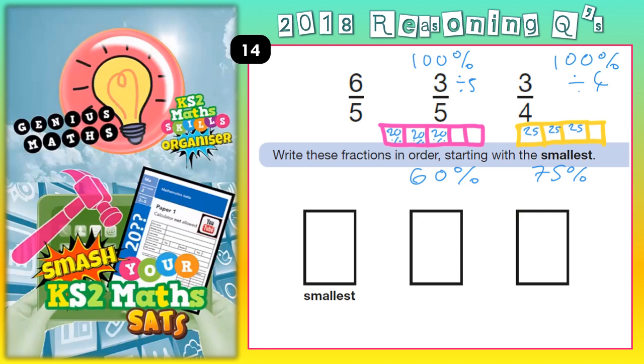Now then from there, you could just use a little bit of logic. Because 6 fifths is obviously bigger than a whole one. It's an improper fraction. 6 divided by 5 is 1 remained 1. And because we're dealing with fifths, it's 1 and 1 fifth. So because that's bigger than a whole one, and the other two are less than a whole one, the 6 fifths has to be the biggest one. So that one's got to go there.